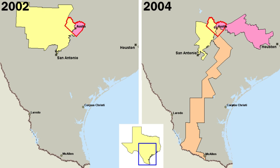The United States is a federal republic in which the President, Congress and federal courts share powers reserved to the national government, according to its constitution. The federal government shares sovereignty with the state governments.